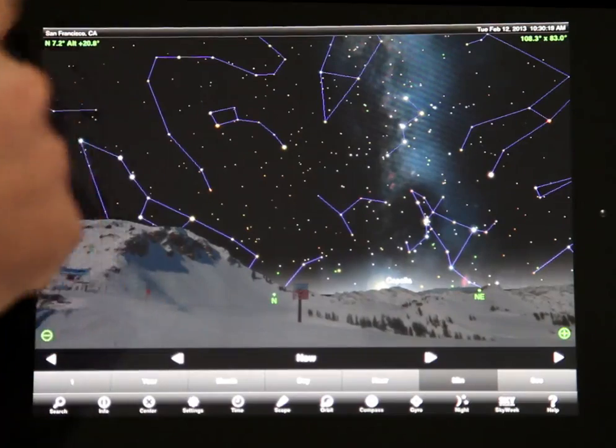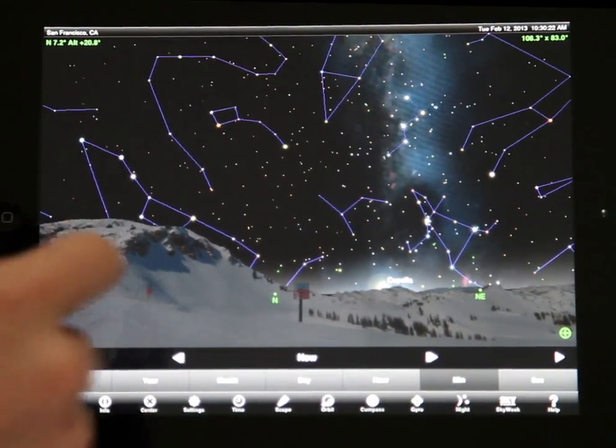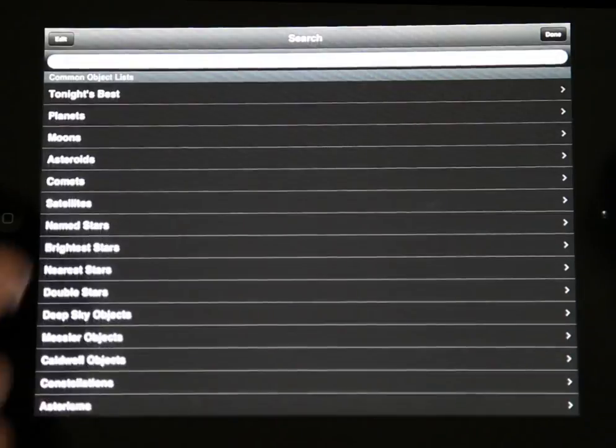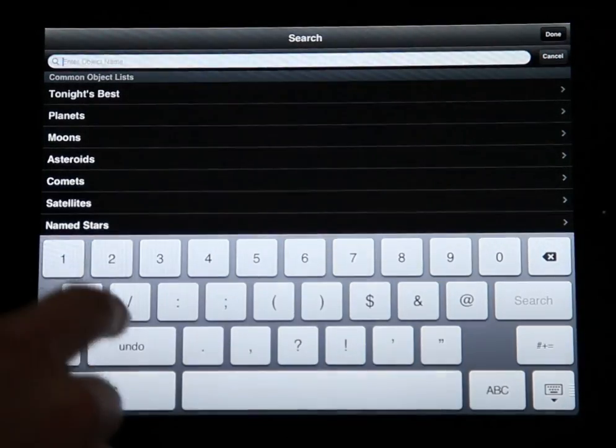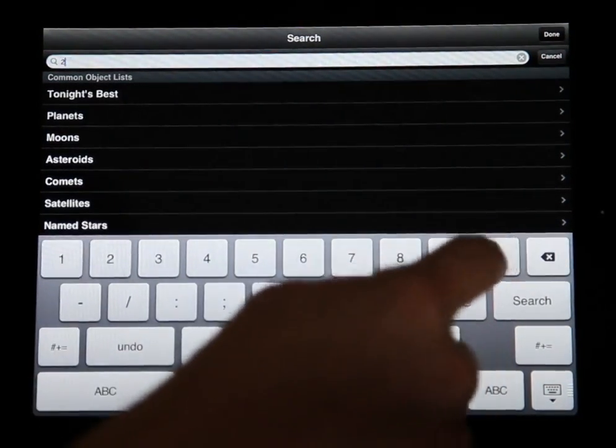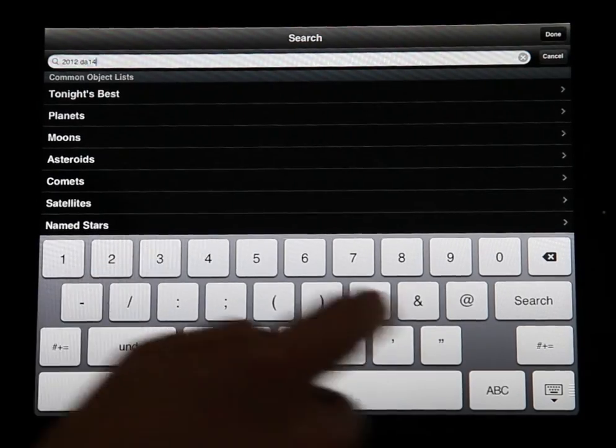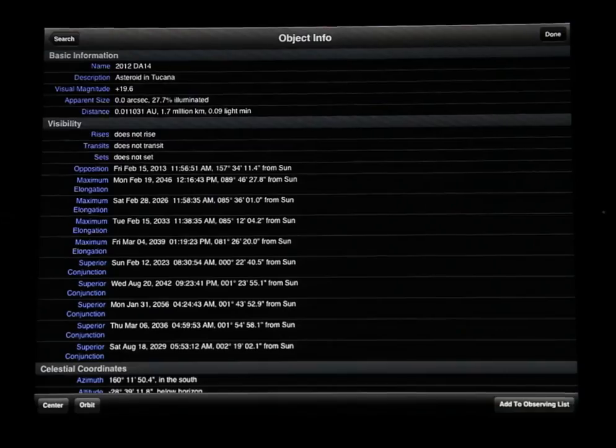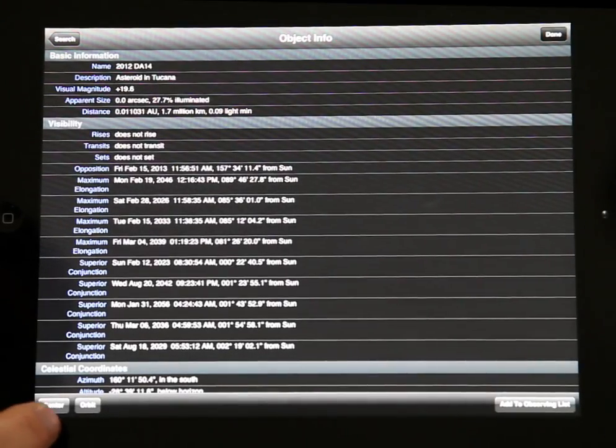It shows you the night sky from your current location. We're here in San Francisco, at your current time. And so let's go search for our asteroid. This little guy is called 2012 DA14. I'll just type it in here, 2-0-1-2-D-A-14. And we're searching for it, and right now the app is doing a little bit of math to figure out where it's going to be in the sky. So let's center on it.